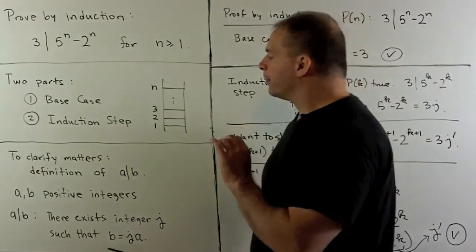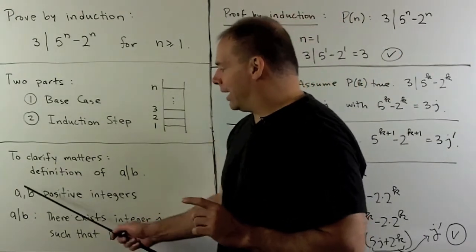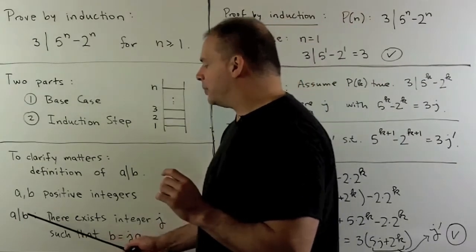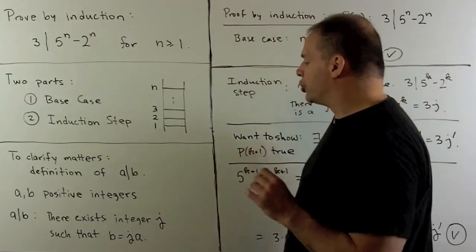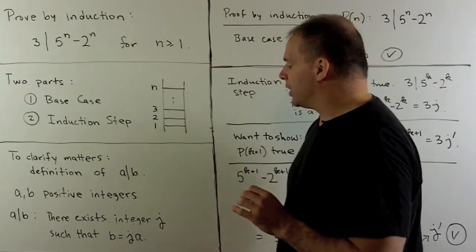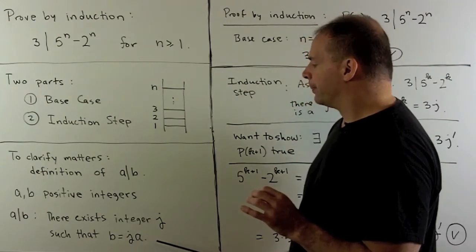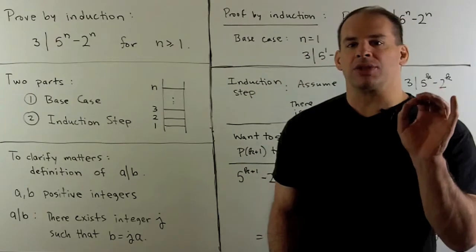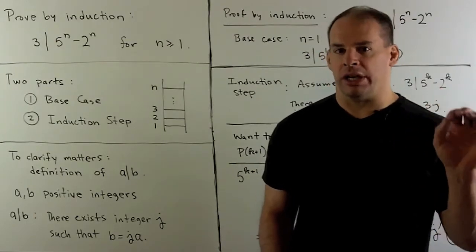So that's going to be, if I have a and b, positive integers, we say that a divides b if there exists another integer j such that b is equal to j times a. Now, that seems a little bit cumbersome, but that's going to make our bookkeeping much cleaner.